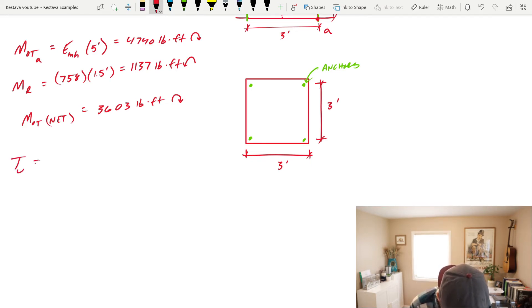To find your uplift, Tu, that would be your net overturning moment divided by whichever way you're looking at it. And we're looking at demand moving from left to right. So your couple would be this three feet, which would then get you tension on those two anchors and compression on those two anchors. Tu equals your net overturning moment divided by your couple of three feet divided by two anchors, which gets us 601 pounds, which we'll circle, per anchor.